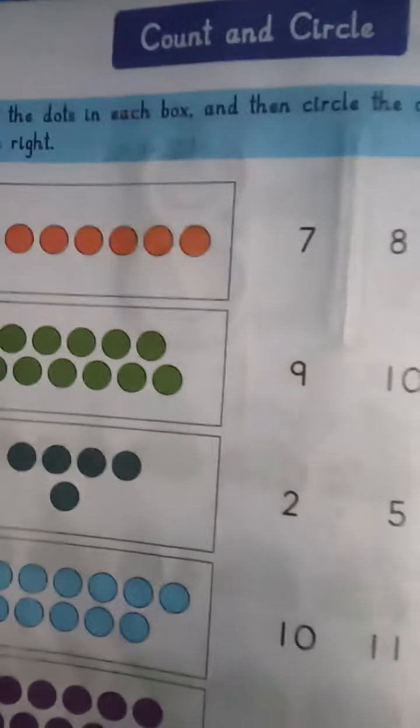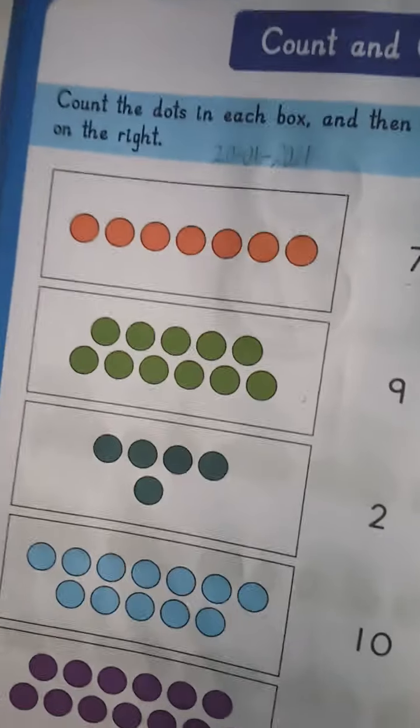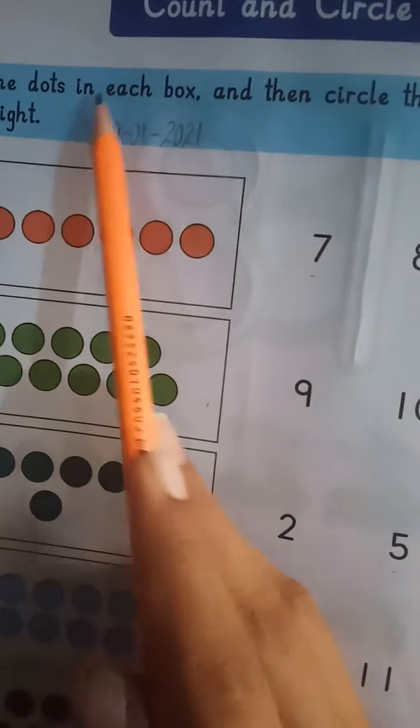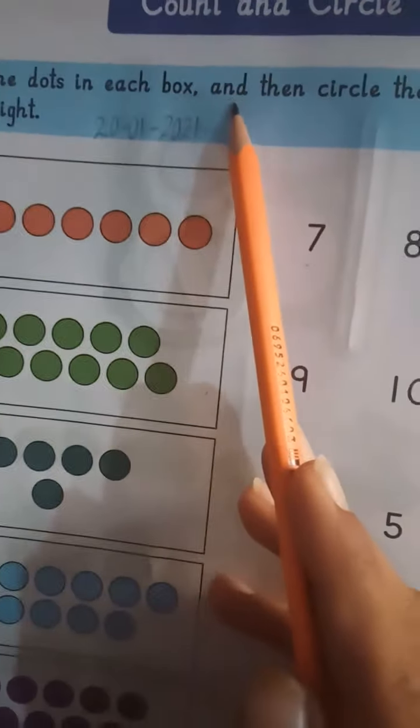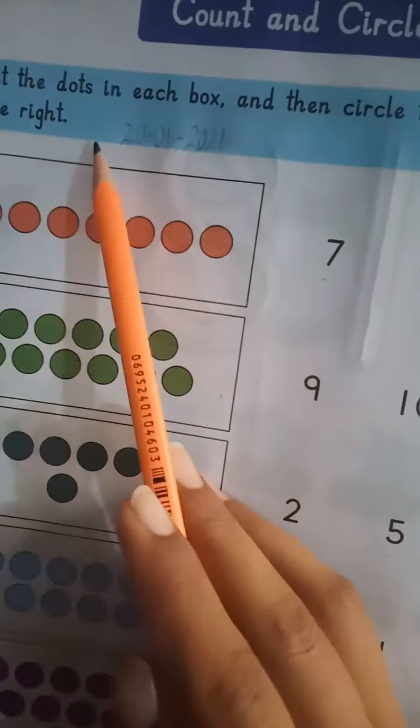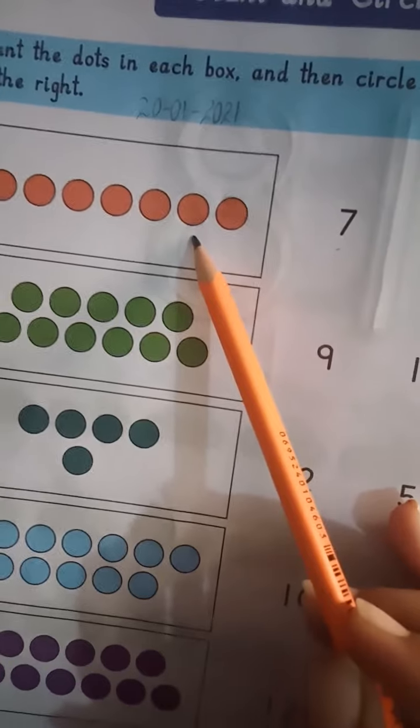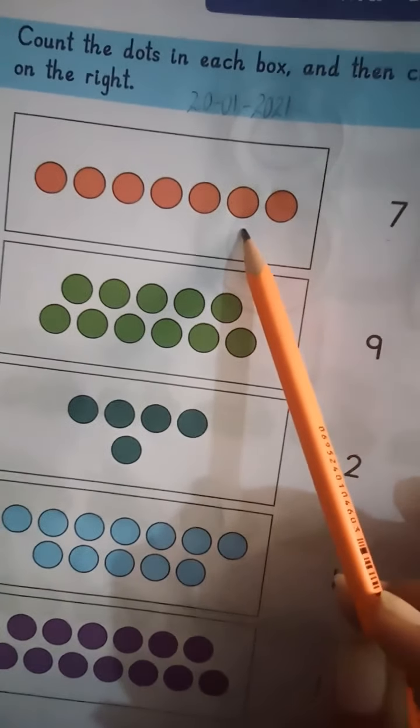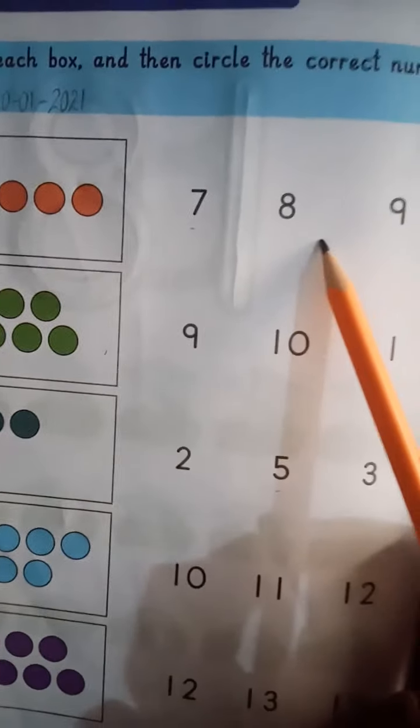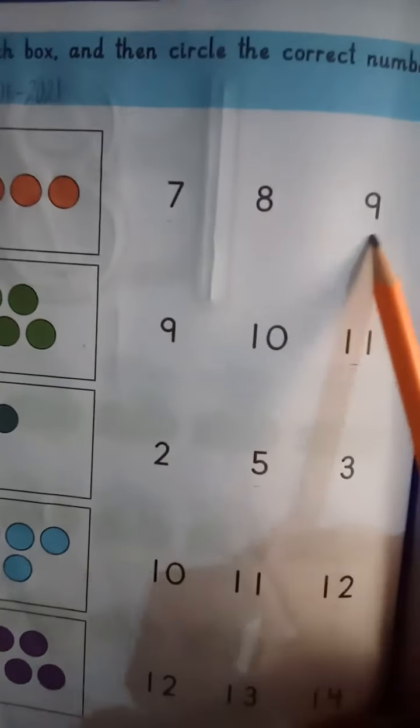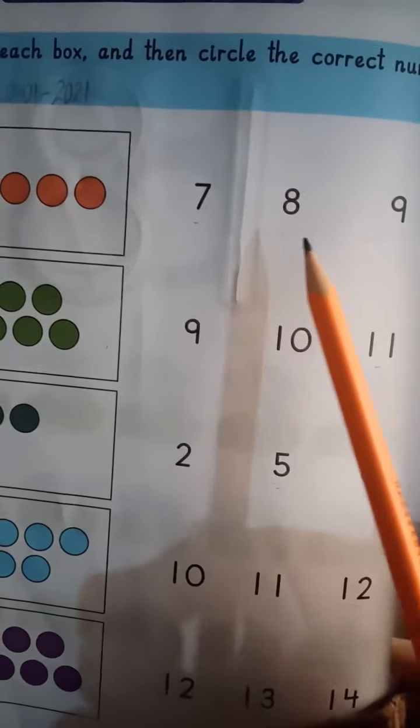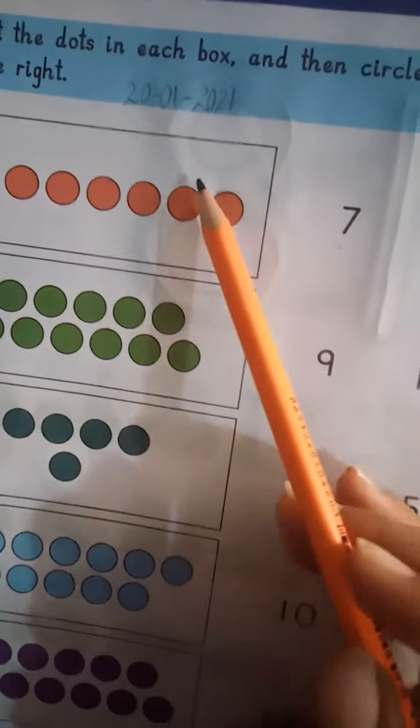Aaj hum karengi activity page, count and circle. Count the dots in each box and then circle the correct number on the right. Okay, count the dots in each box. You need to count and then on the right, there are numbers. What is correct? You will circle the correct number. Let's count with me.